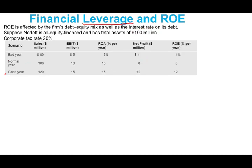If sales went down by 20 million, EBIT is 5 million — cut down by half, from 10 to 5. Return on asset is 5%: EBIT of 5 divided by 100 million. Net profit is 4 million. Return on equity is 4%. Although your sales did not go down by half, your profitability ratios were cut down in half.